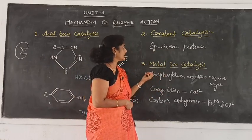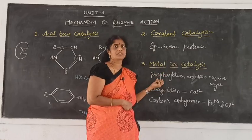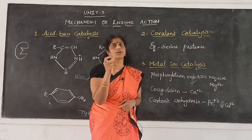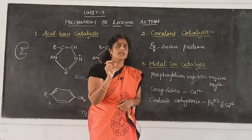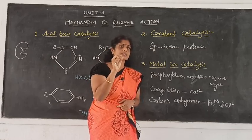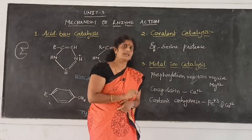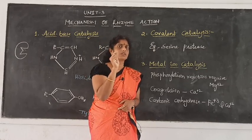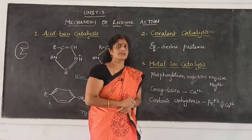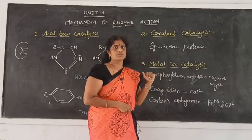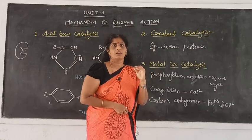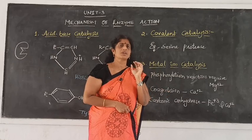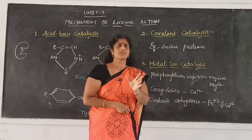The third important catalysis is metal ion catalysis. Enzymes require co-enzymes and co-factors. For example, in phosphorylation — the donation of a phosphate group — ATP is involved.